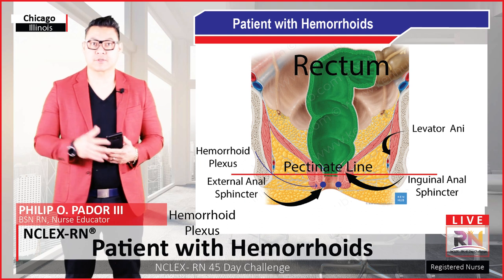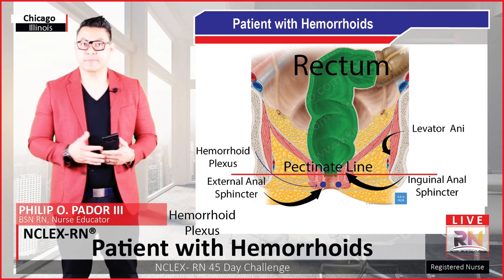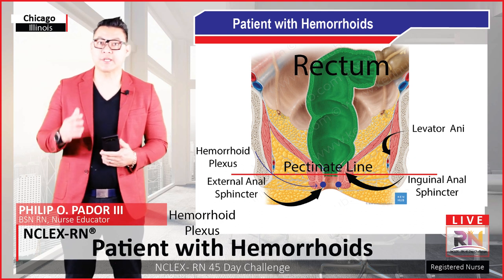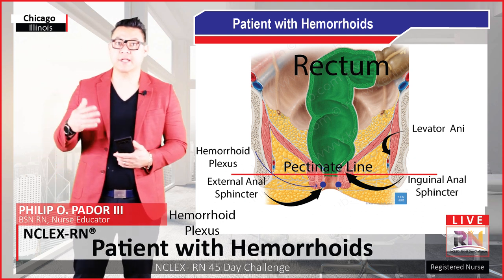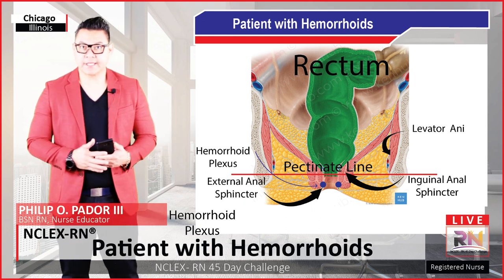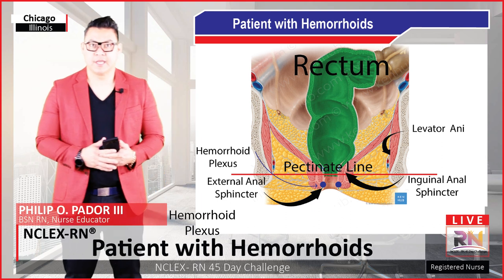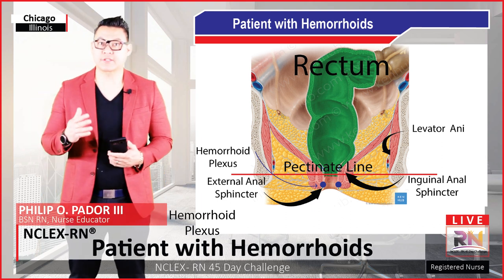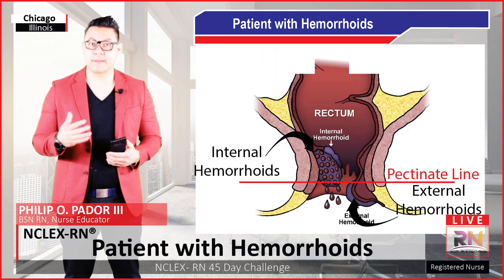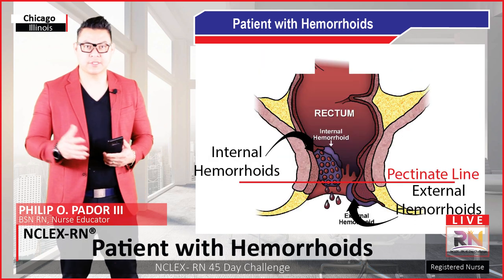There are muscles also surrounding the anal canal. These are the internal sphincter muscles, which are controlled involuntarily, and then the external anal sphincter, which is under voluntary control. Hemorrhoid plexi are present both externally and internally, and again, these are normal anatomical structures. In the condition known as hemorrhoids, these plexi enlarge and can cause serious discomfort.